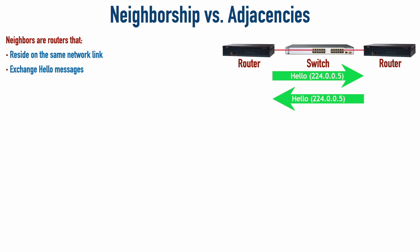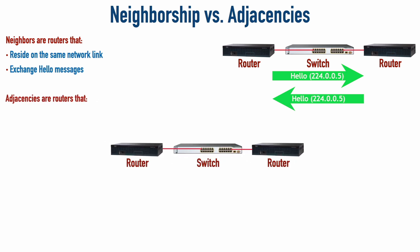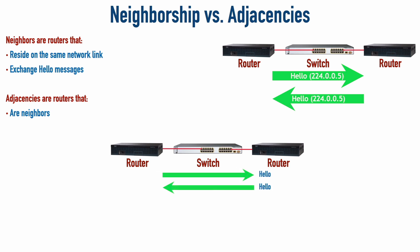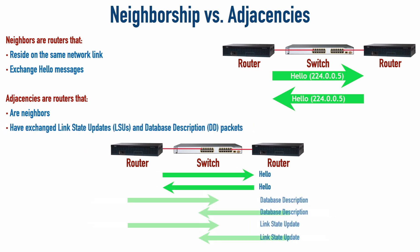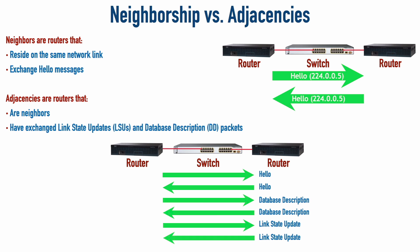An adjacency goes further. Routers that are OSPF adjacent are neighbors — that's a prerequisite — but in addition to saying hello, they have exchanged information to build the link state database. Think of my other neighbor: we've worked on projects together, been to each other's homes — we exchange information. That's an adjacency. You might wonder why we wouldn't just make everybody adjacent. The answer is it doesn't scale well.